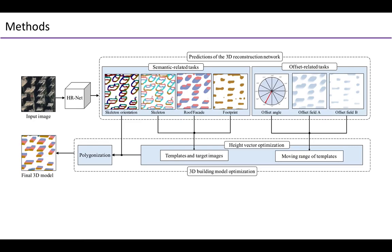In this work, we design a multi-task building reconstruction network to learn the visible parts of buildings and their relations via 4 semantic-related and 3 offset-related tasks, which is named as MTBRNET.